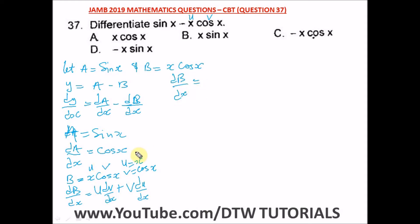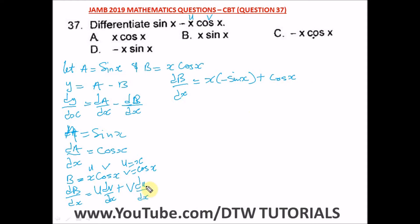dv/dx is the differentiation of cos x, which gives us negative sin x. Plus v — which is cos x — times du/dx. du/dx is the differentiation of x, and the differentiation of x is just 1.